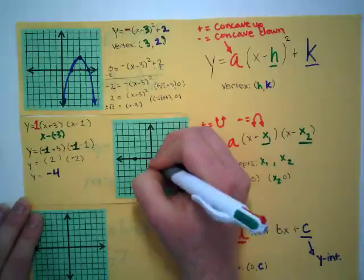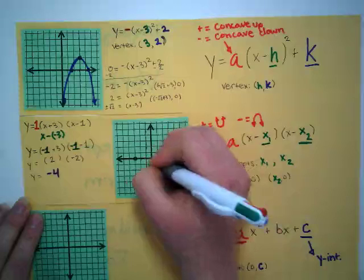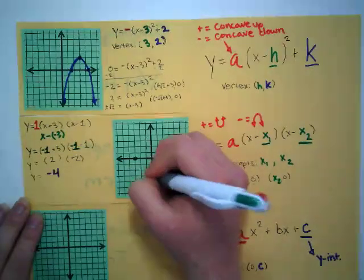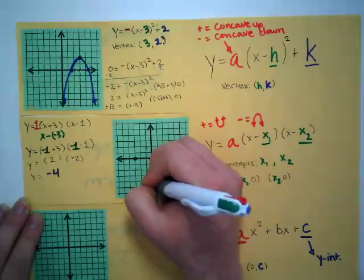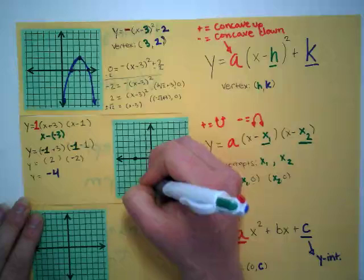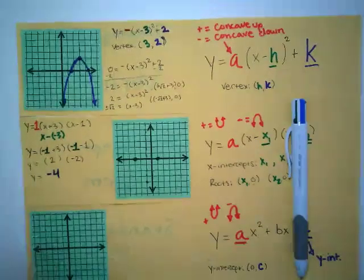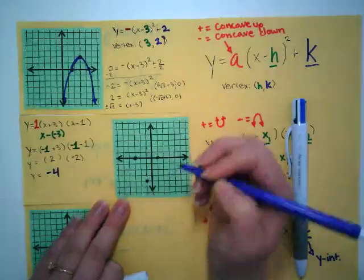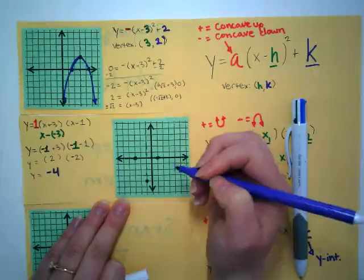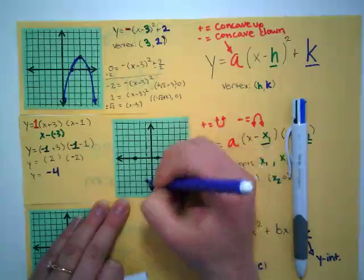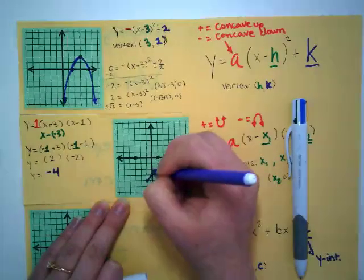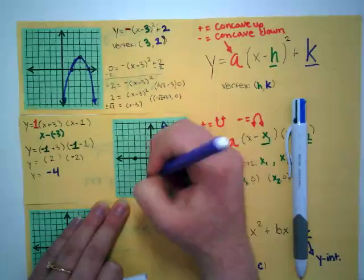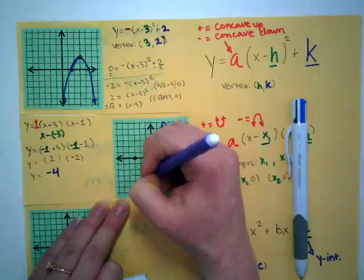I'm going to plot the vertex — going over negative 1 and down 4. Now we have enough information to complete the parabola.